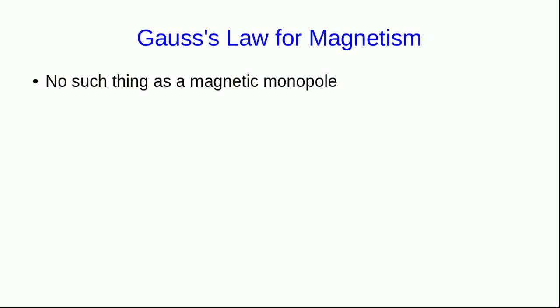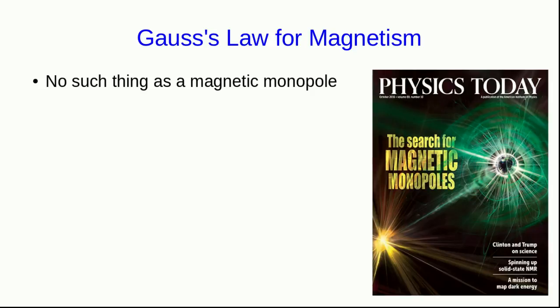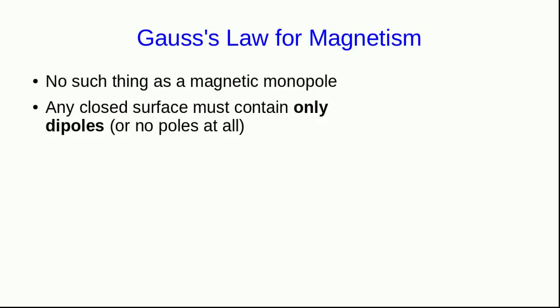There is an equivalent to Gauss's law for magnetism. And to see it, you just have to note that there's no such thing as a magnetic monopole. And when I say that, what I mean is that we've searched extensively for them. Here's a recent cover of Physics Today. And experimentally, we have never seen them. We're continuing to search for them, but so far it looks like they don't exist. And so any closed surface we define must contain only dipoles, or of course it could contain no poles at all. That means it contains poles that have field lines coming out of them and an equal number of poles that have field lines going into them. And so the sum of the field lines out and in must be zero. And so the total magnetic flux through any closed surface is always zero.